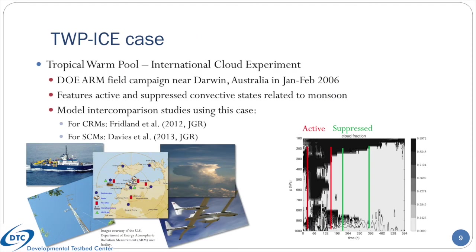The first case is based on the TWP-ICE field campaign, which stands for the Tropical Warm Pool International Cloud Experiment. The field campaign was undertaken by the DOE ARM program and took place near Darwin, Australia in January–February of 2006. It was sampled by both remote and in-situ measurement platforms over the ocean and land. A case for both LES and single-column models was created that features both active and suppressed convective states related to the local monsoon. Papers by Fridlind and co-authors and Davies and co-authors in JGR are excellent resources.